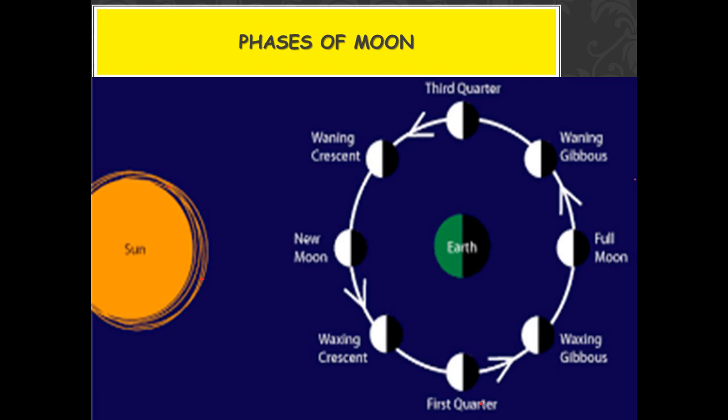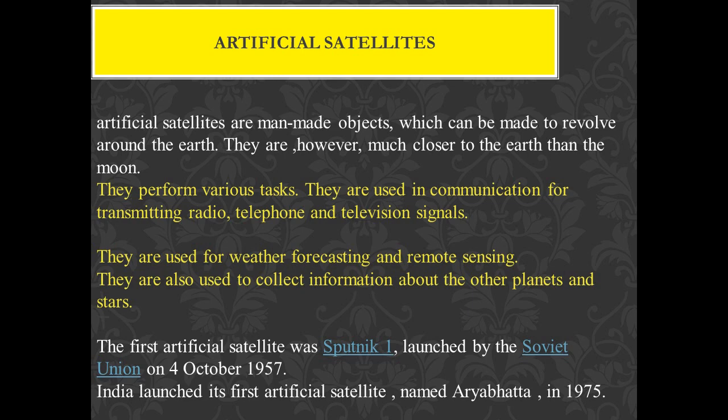Then slowly we see that its size is reduced, it becomes a half moon again, and then one day comes when the moon is again not visible. We call this new moon day, or Amawas.